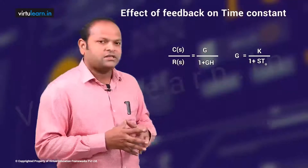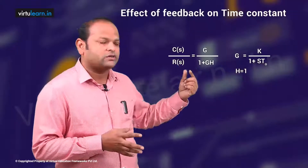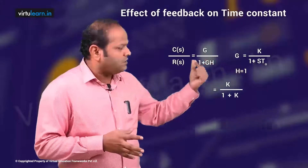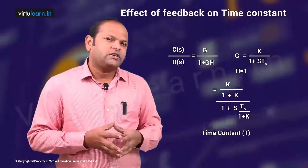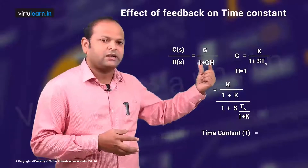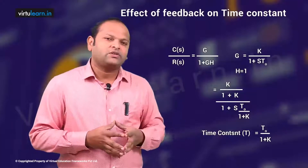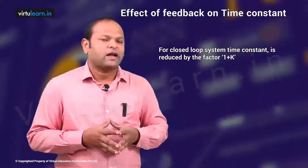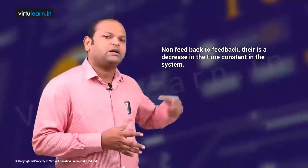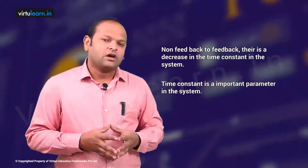The result gives C(s)/R(s) = K/(1 + K) with the denominator written as 1 + s·(T₀/(1 + K)). The coefficient of the s term is the time constant, so the time constant of the closed loop system is T₀/(1 + K). For the non-feedback system it is only T₀. Therefore, the time constant of the closed loop system is reduced by the factor (1 + K). This means from non-feedback to feedback we have a decrease in the time constant, which is an important parameter telling us how fast the system reaches its steady state value.